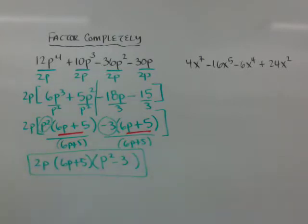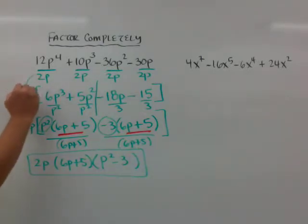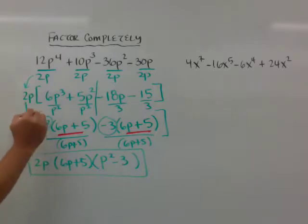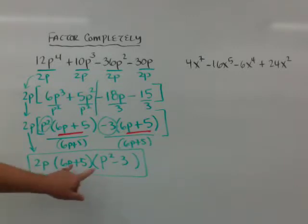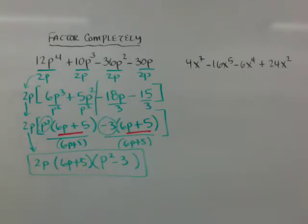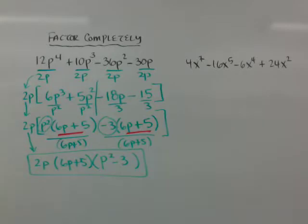And if you notice, when I took this 2p out here, I kept it going down. So don't forget that 2p that you pulled out first. You still end up with these two binomials, but you still have this 2p that you factored out first.